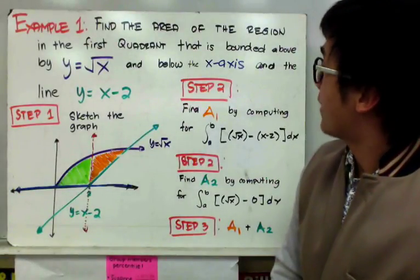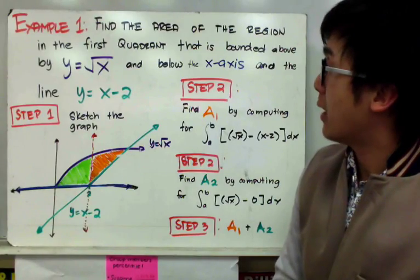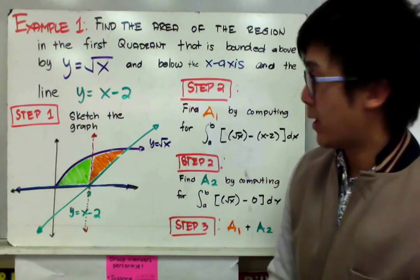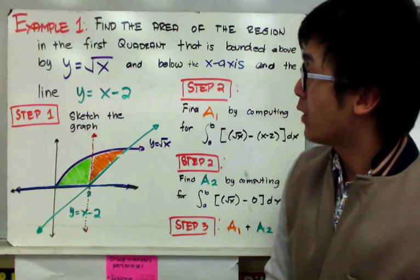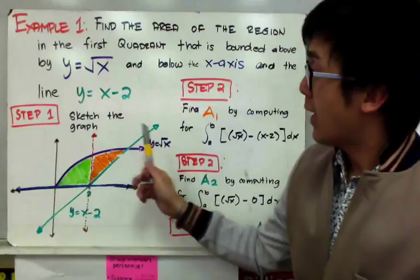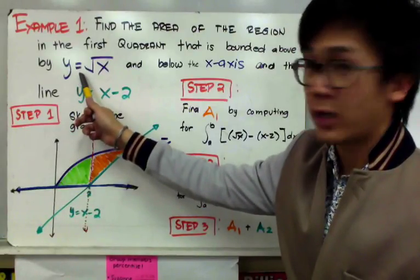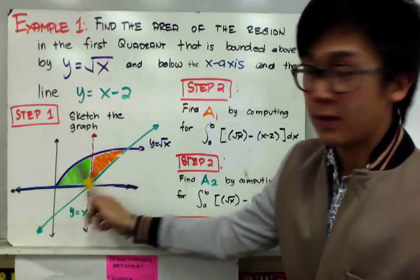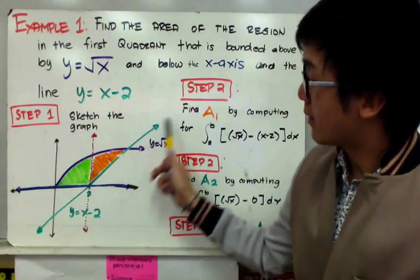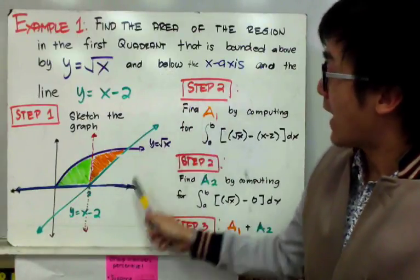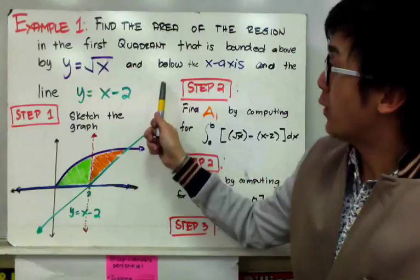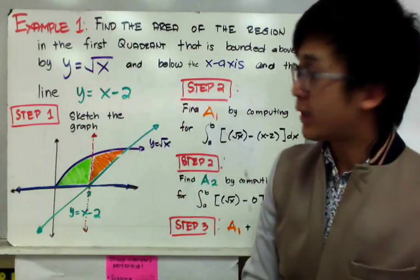For this example, we need to find the area of the region in the first quadrant bounded above by y equals the square root of x, below by the x-axis, and also by the line y equals x minus 2. So we're working with both a curve and a line. Sketching the graph, y equals square root of x is a curve, y equals x minus 2 is a line, and the x-axis is also included since it's stated in the problem.